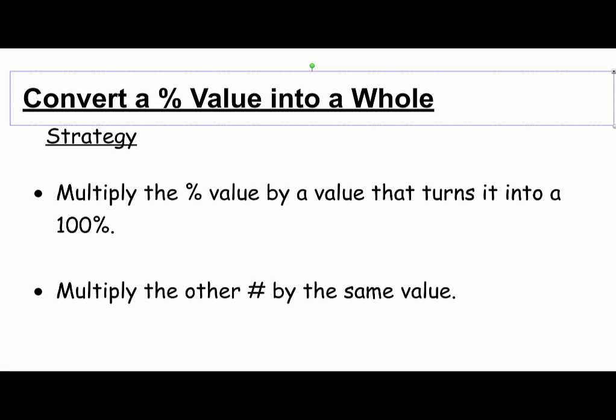The first strategy to convert a percentage value into a whole amount is to multiply the percentage by a value that turns it into 100, then multiply the other number by the same thing. It's like making equivalent fractions — whatever you do to the numerator you do to the denominator.